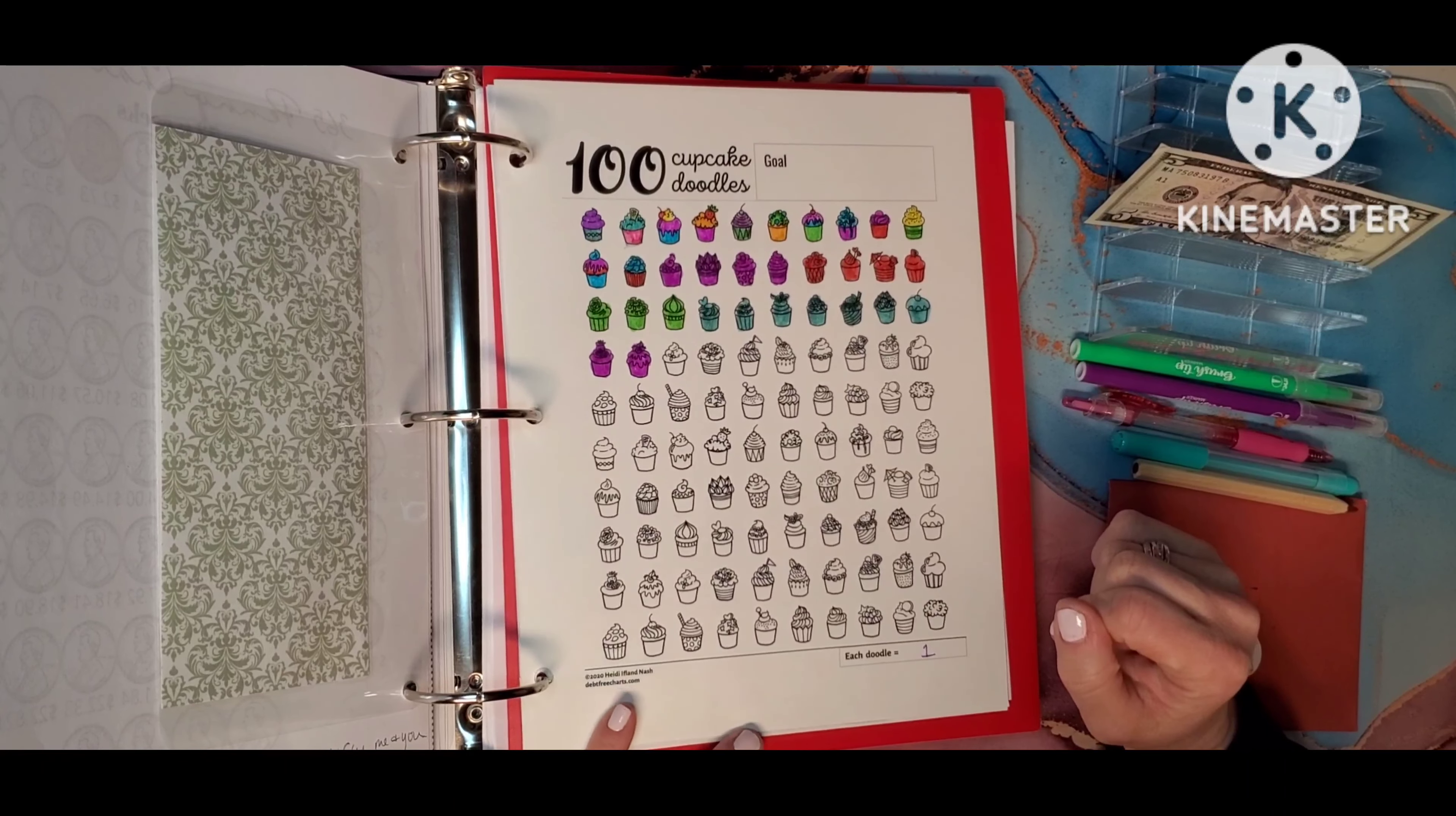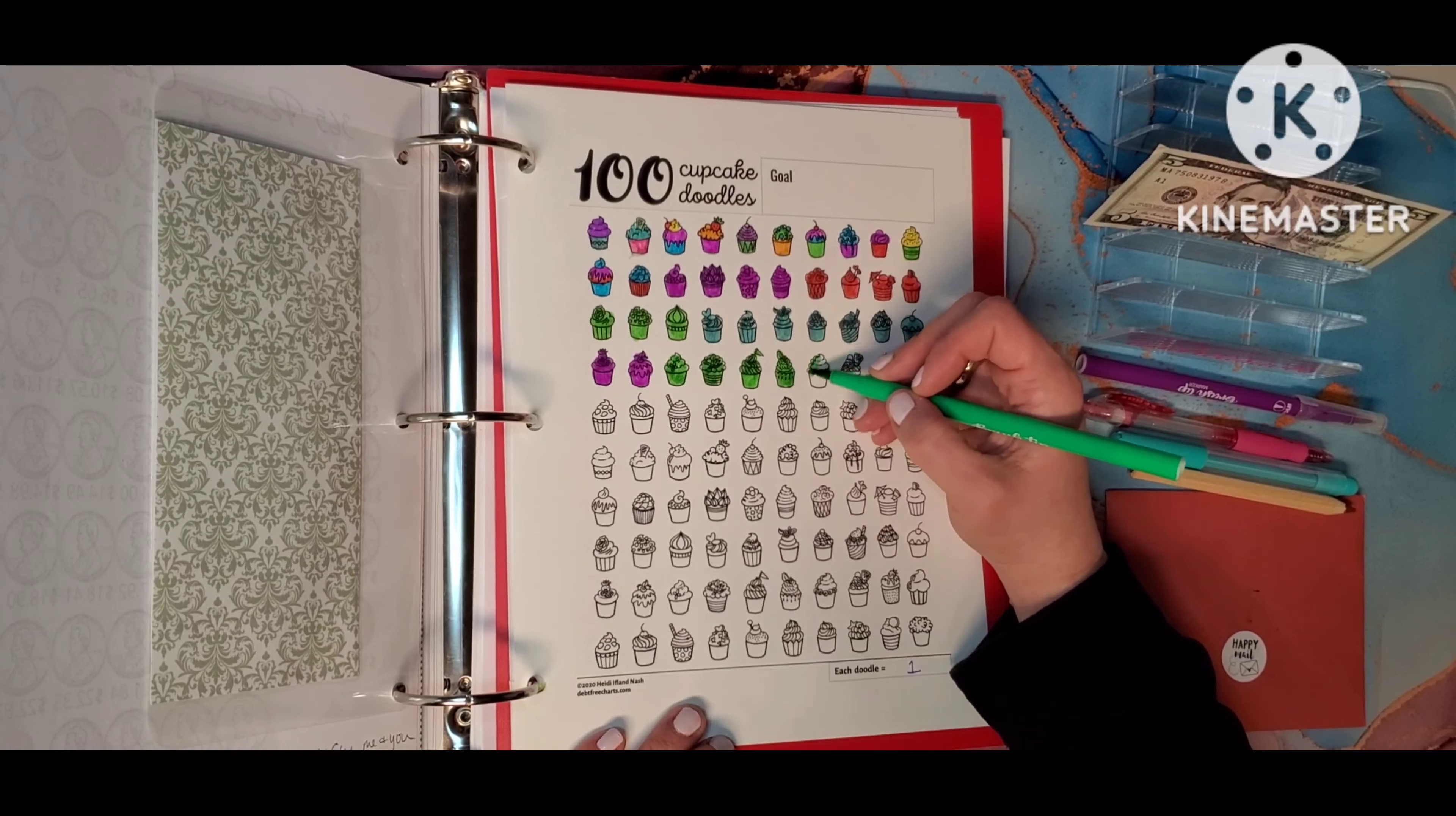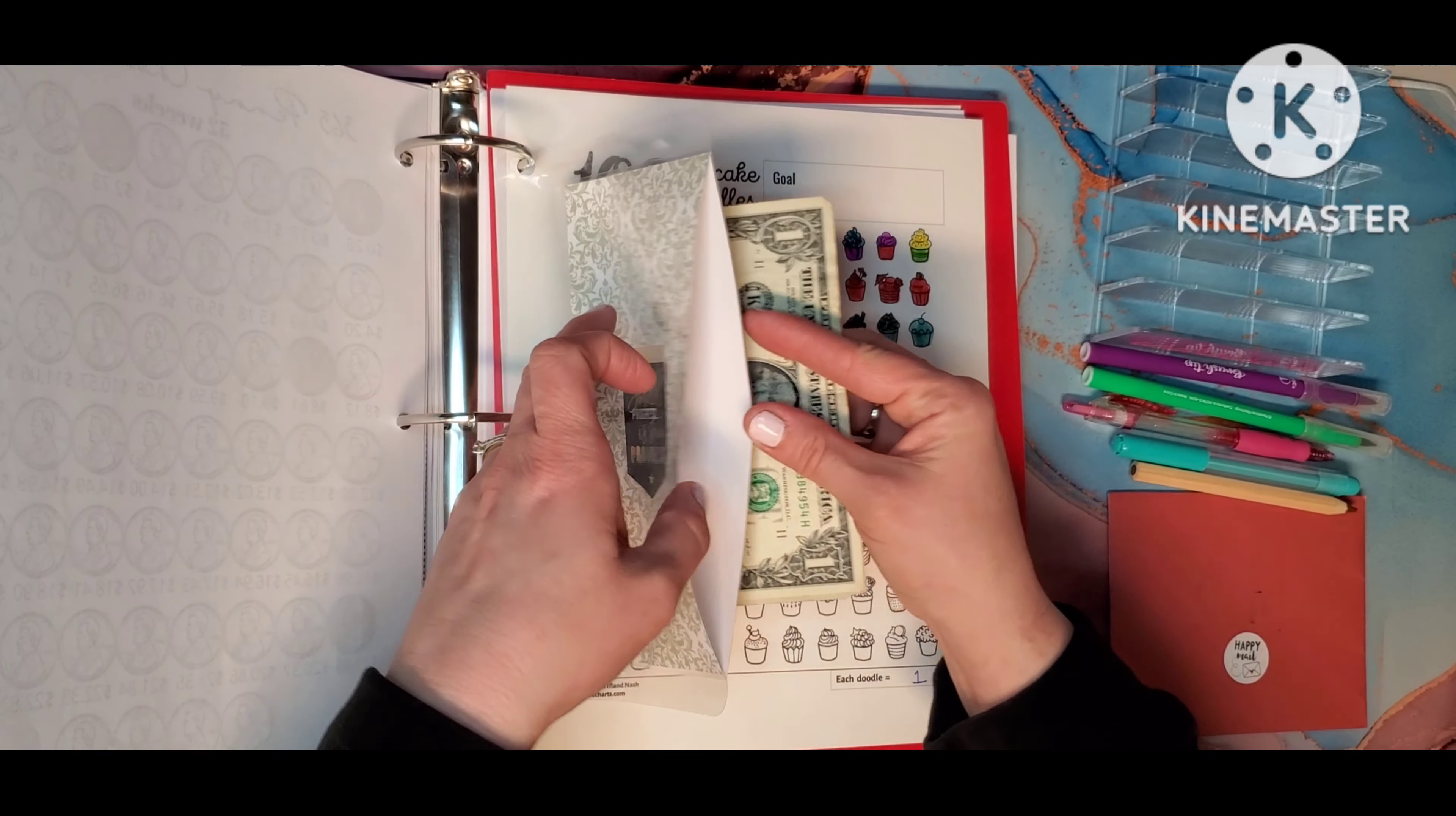This is the one hundred cupcake doodles. This is from debtfreecharts.com. We'll do five of these little cupcakes today. I remember I decided I don't like to color these little tiny details in. So we're just changing the color up each week and filling them in. When we get to a hundred, because I have decided that each of these is going to be worth one dollar, I will have an extra hundred dollars saved up. Once again, I don't really know what this one is going to go for, but I've got several savings accounts that I need to kind of beef up. So we are going to add our five to here. I have twenty, thirty-five, thirty-six, and thirty-seven. That is very exciting.